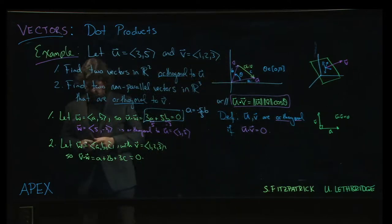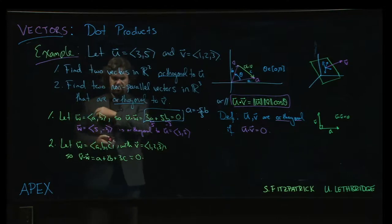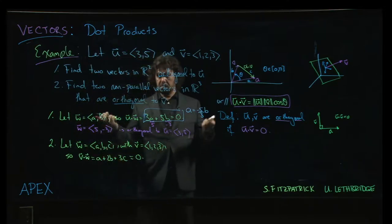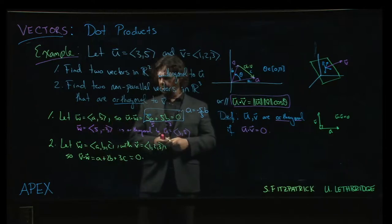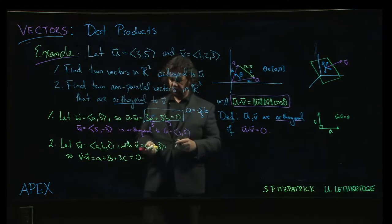Which might leave you wondering, among all those possibilities how do we actually narrow this, how do we pick, how do we come up with an example that works? Well one thing you can do is just choose values for say two of those three variables and then use that equation to force a value for the third.